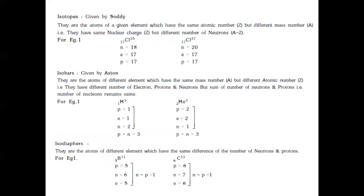Isotopes are atoms of a given element which have the same atomic number but different mass numbers. Examples include hydrogen, chlorine, and carbon — any isotopes have the same atomic number but different mass number.